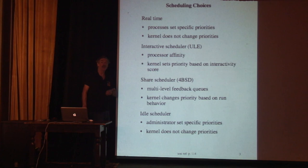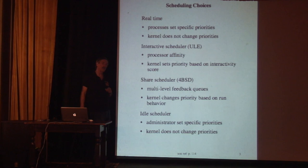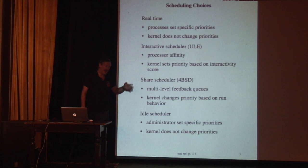The high-level scheduler figures out where different things should be placed and what their priorities ought to be. For real-time, those decisions are made in user application land — the application determines the priorities of its threads and re-evaluates periodically. For ULE or 4BSD, these decisions are made inside the kernel itself, much less frequently. For example, 4BSD once a second runs through all processes and recalculates their priorities based on recent behavior.